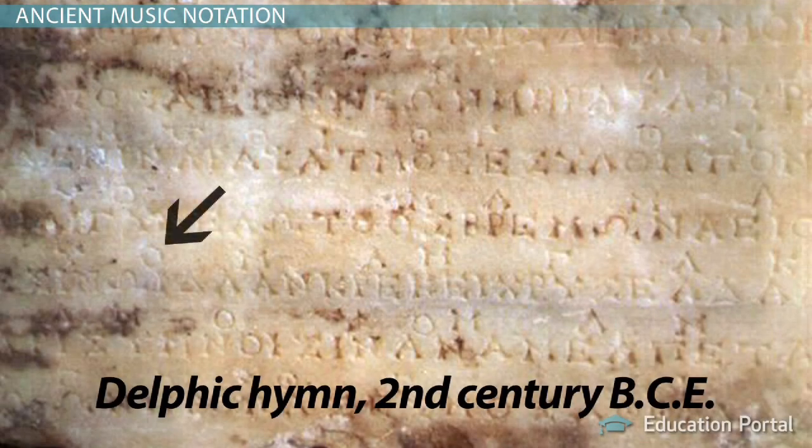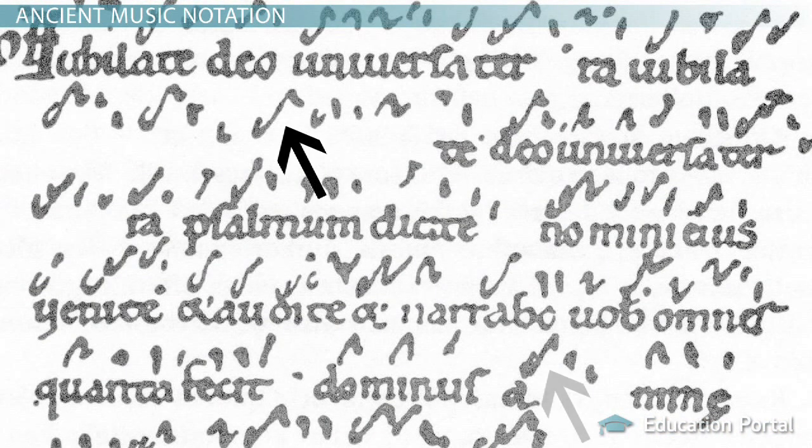Most often, this consisted of small letters written near the words of a song. In the Byzantine Empire, squiggly marks were used to show the melody.